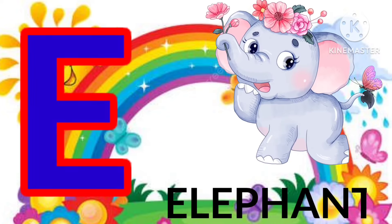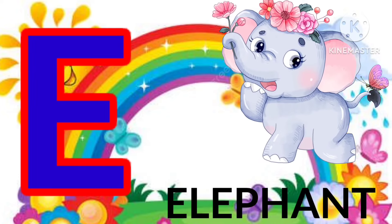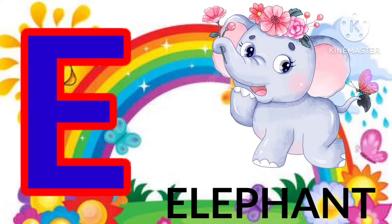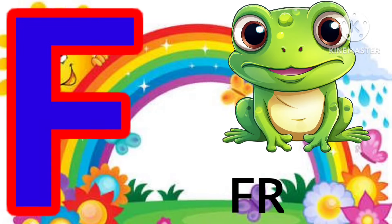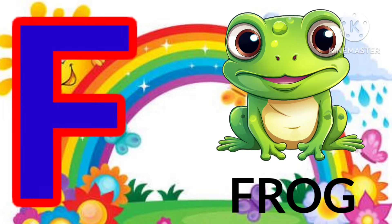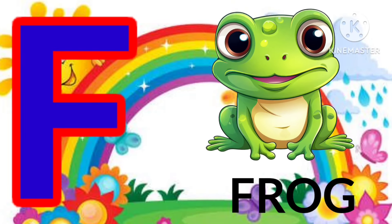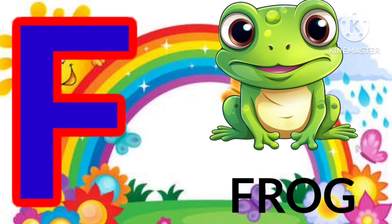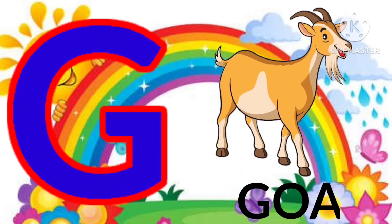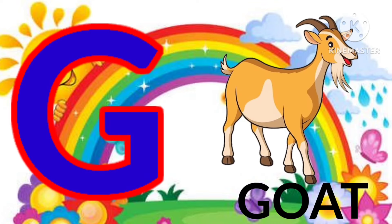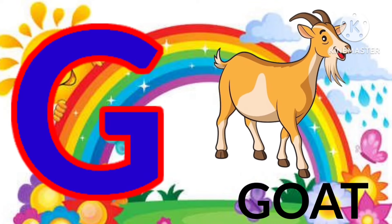E is for elephant, e-e-elephant. F is for frog, f-f-frog. G is for goat, g-g-goat.